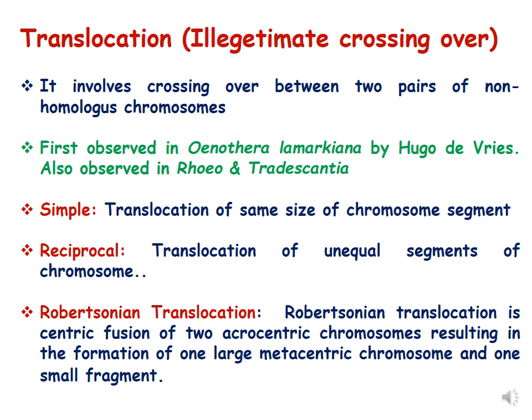There is also Robertsonian translocation, which occurs between acrocentric chromosomes. Robertsonian translocation is also called centric fusion of two acrocentric chromosomes, and it results in the formation of one large chromosome and one small fragment. We will see this in subsequent slides.